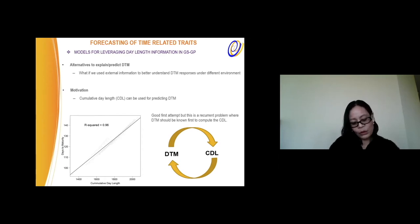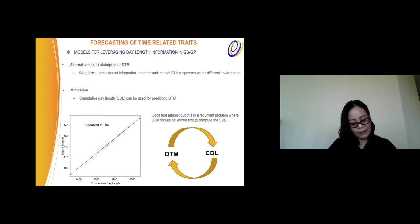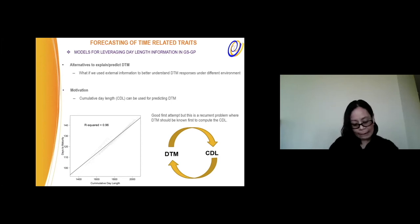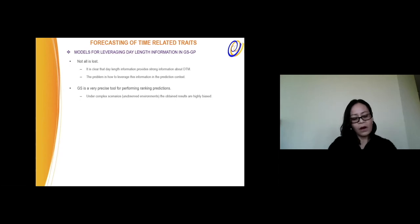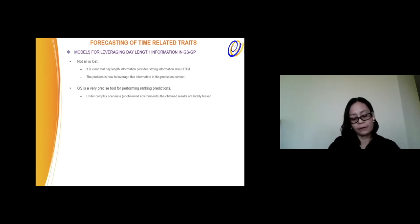One initial idea we used was the daylength data. We considered the cumulative daylength information for predicting days to maturity in soybeans, and we obtained a plot showing that having the cumulative daylength information makes it very easy to predict days to maturity for any genotype in any environment. This is a very good result, but there is a recurrent problem: we need to know the days to maturity first in order to know how many days the daylength information will be accumulating. Nevertheless, it is clear that the daylength information provides strong information about days to maturity in soybeans. The problem is how to leverage this information in the prediction context.